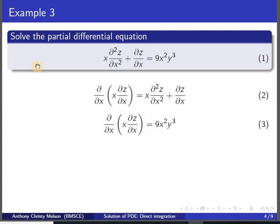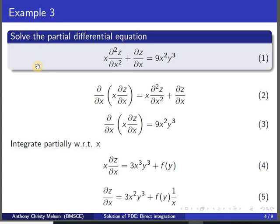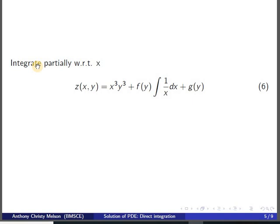Now we integrate this partially with respect to x. The result is x·∂z/∂x equal to 3x³y³ plus the constant of integration with respect to x, which is f(y). Dividing throughout by x gives equation 5. Integrating equation 5 again partially with respect to x gives x³y³ plus f(y)·∫(1/x)dx plus the constant of integration g(y), which further simplifies to the final solution, equation 7.